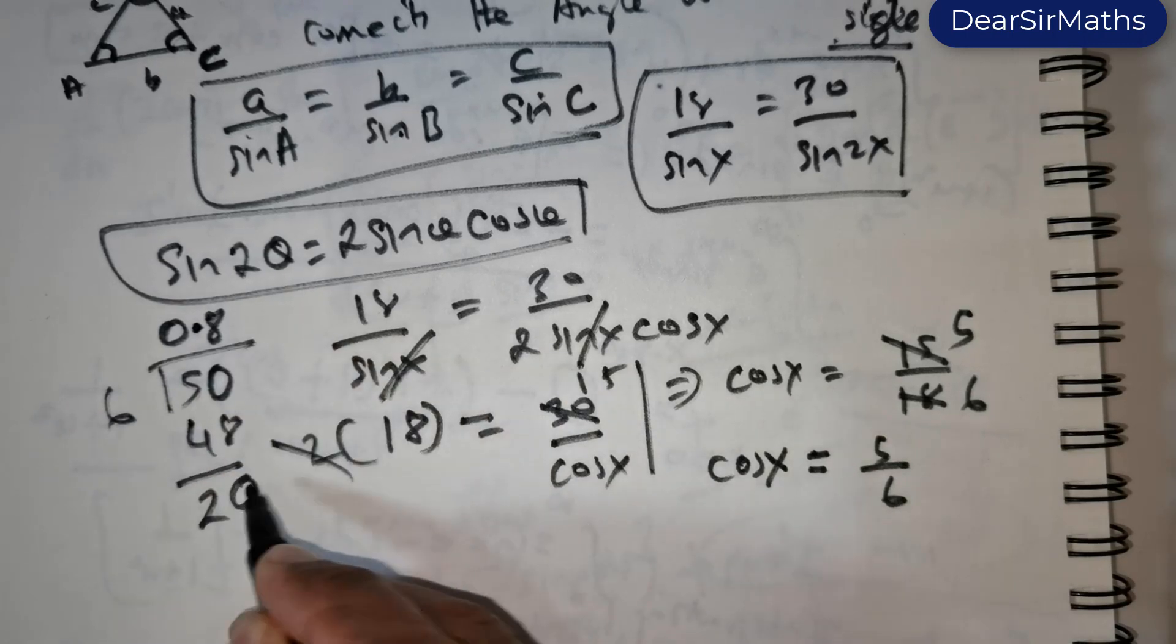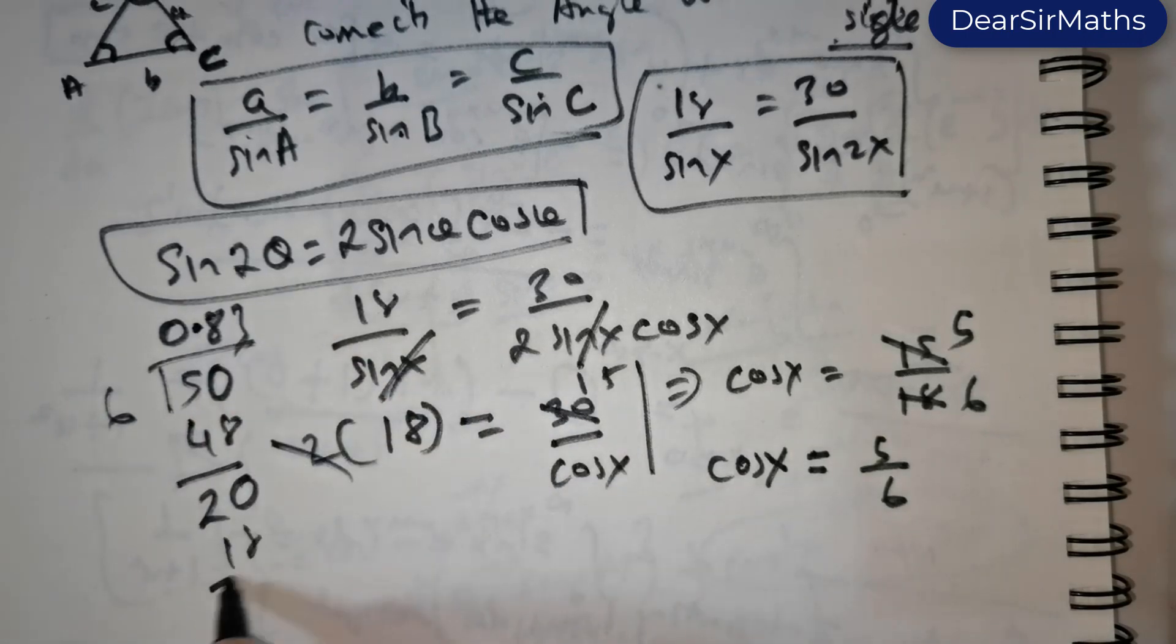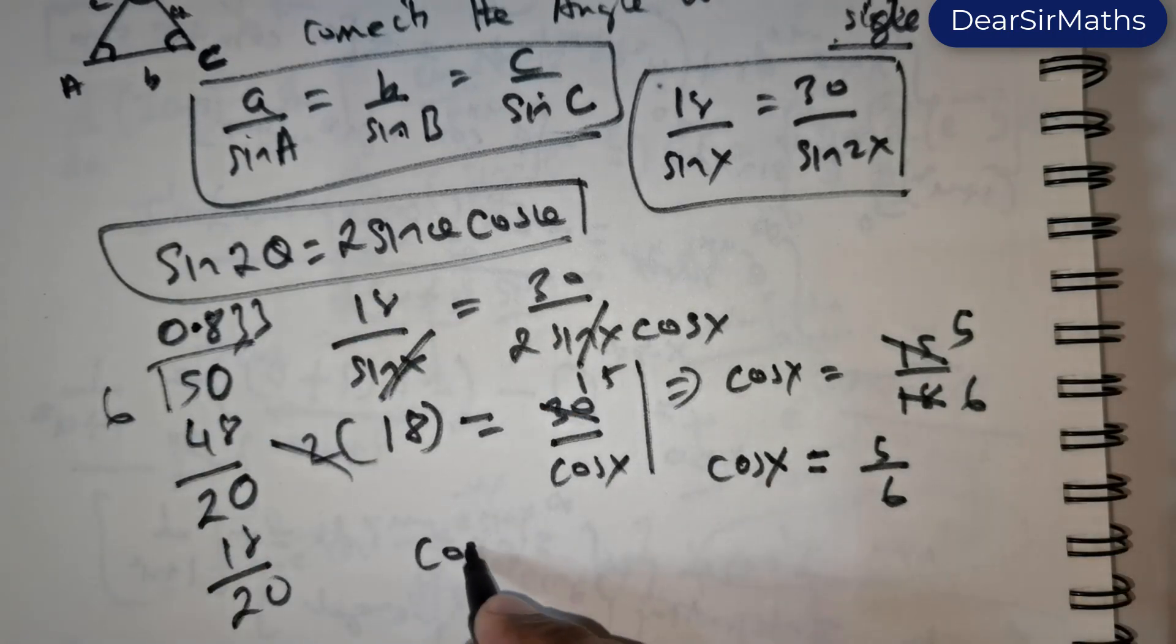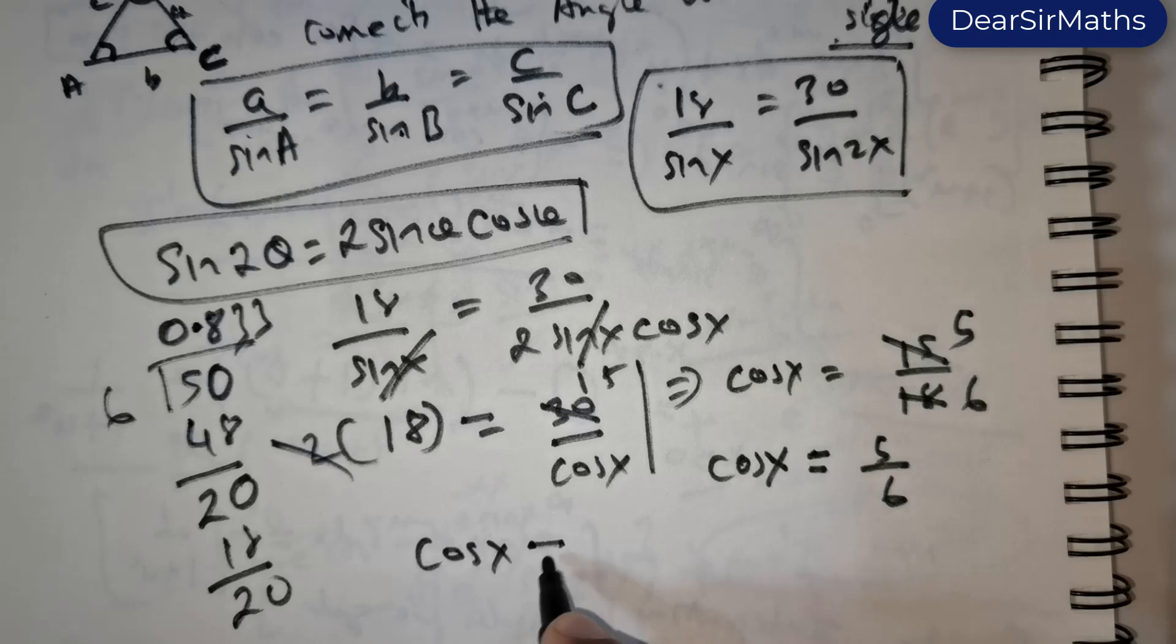Again I add a 0. 6 times 3 is 18: 2, 0, 3, and it goes on like that. So I get cos x to be approximately equal to 0.833.